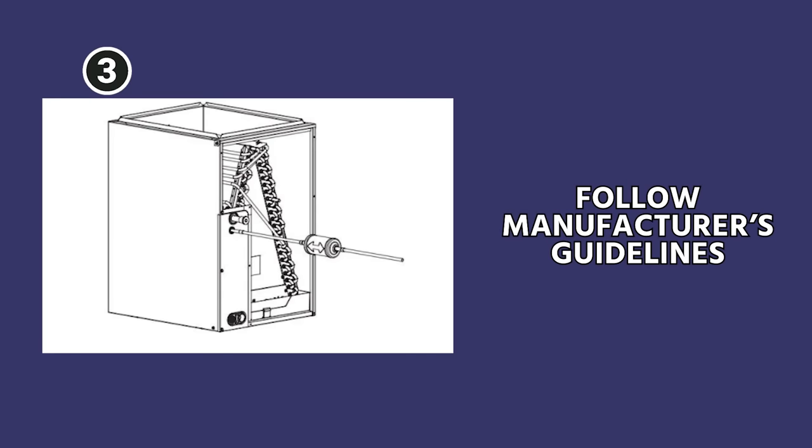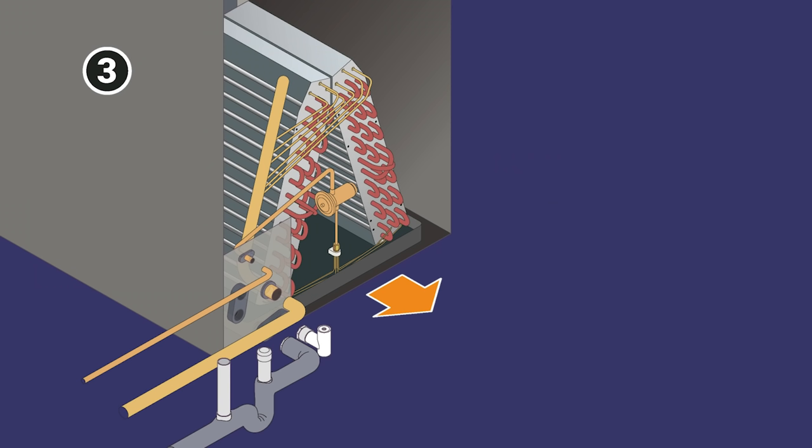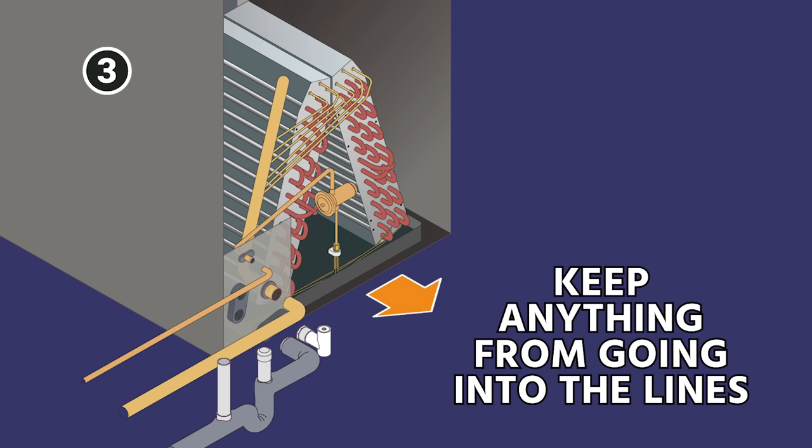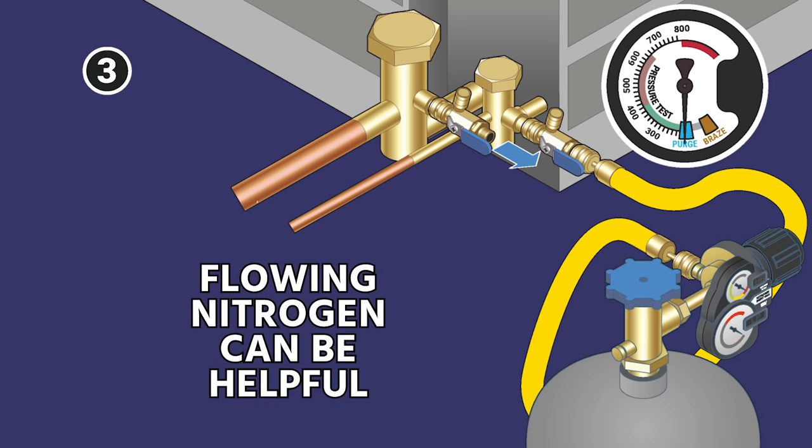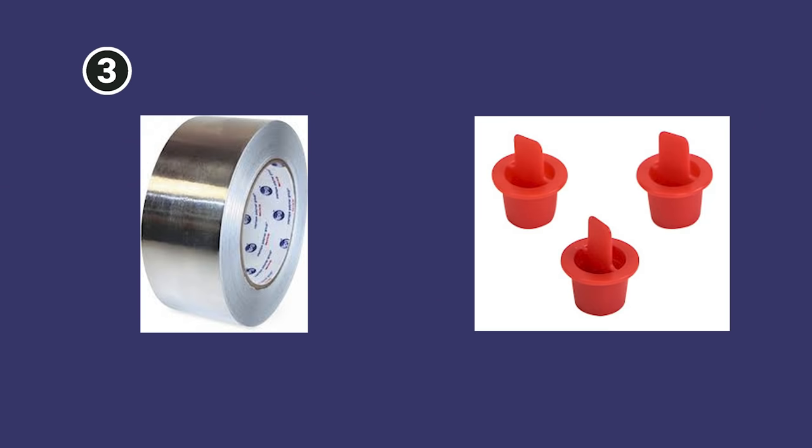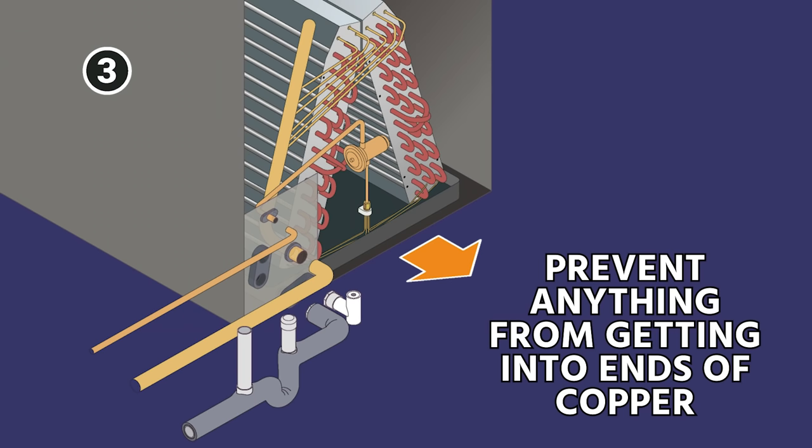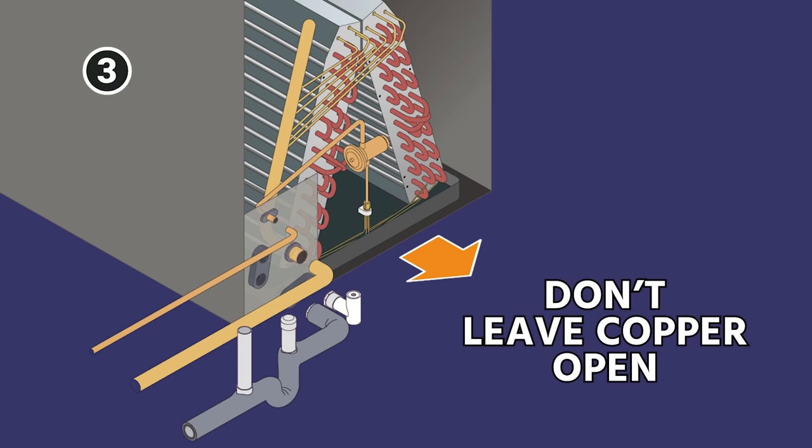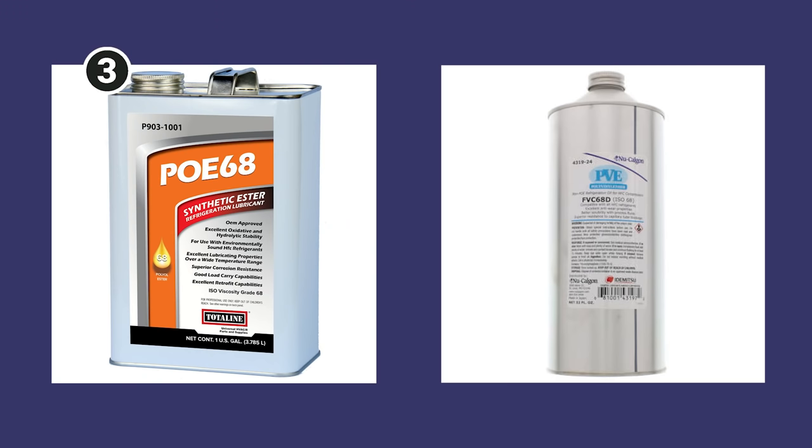But again, follow your company and manufacturer's guidelines on that because that is kind of a controversial thing. When you pull that old evaporator coil out, make sure that you are keeping anything from going into the lines. That's where flowing nitrogen can be helpful. You want to keep some tape or plugs to plug up the ends of those lines if you aren't in the process of flowing nitrogen at that time, just to prevent anything from getting into the ends of the copper. You do not want to leave copper open for any amount of time, especially nowadays with PoE and PVE oil. It can begin to become contaminated very quickly.